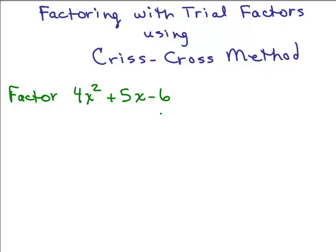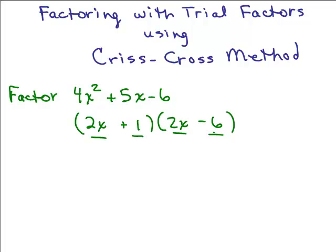There are many ways of factoring this — this is just one possibility. In the traditional trial factors method, what you do is you put some parentheses here, and whatever goes in these spots has to multiply out to be 4x squared, so you could try 4x and x, or 2x and 2x. Then here and here this has to multiply out to be negative 6, which means one's got to be positive and one's got to be negative. So you might try plus 1 and minus 6, for instance.